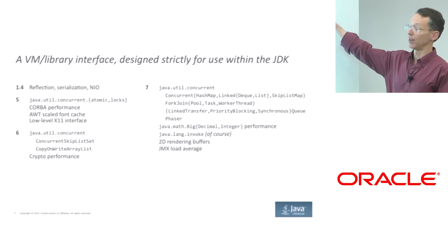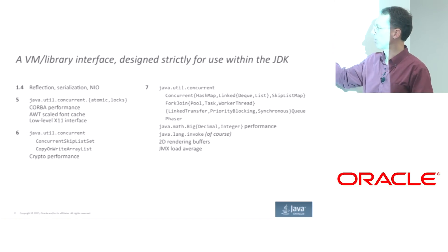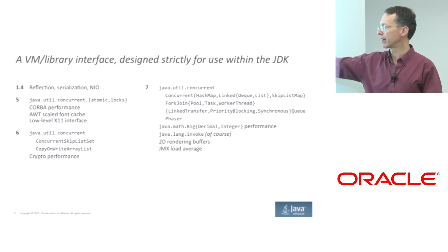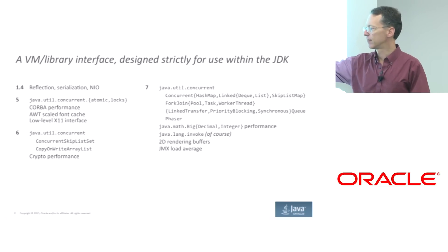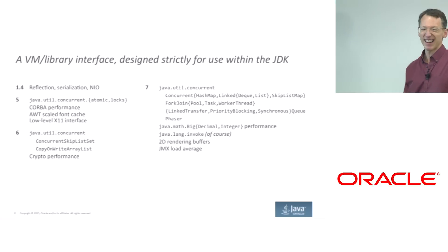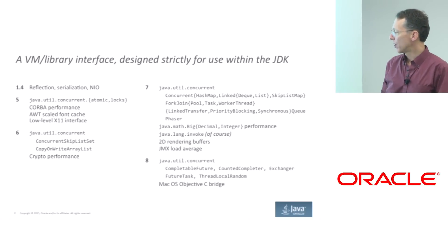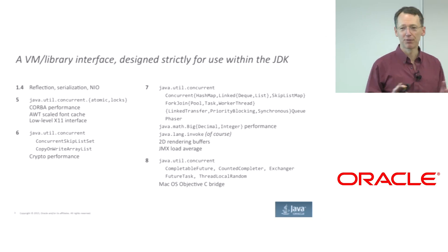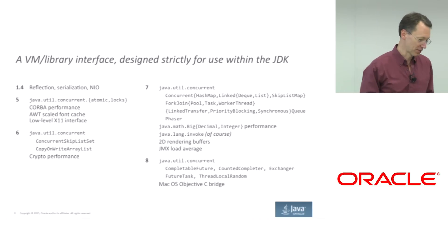In Java 7, lots more stuff in java.util.concurrent, and other performance work: java.math.BigDecimal and BigInteger were sped up substantially by using some Unsafe primitives. java.lang.invoke method handles, of course, used Unsafe. Also 2D rendering buffers and load average for JMX. I mean, why is that Unsafe? Well, it was a convenient place to put it — it's not actually unsafe, and neither is some of the other stuff in Unsafe, to be honest. In Java 8, yet more java.util.concurrent stuff, and it's also used in the Mac OS Objective-C bridge. This was about an hour of grepping through archival source code repositories to figure it out.